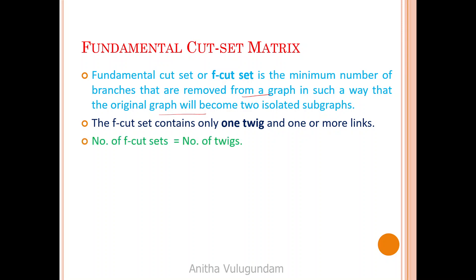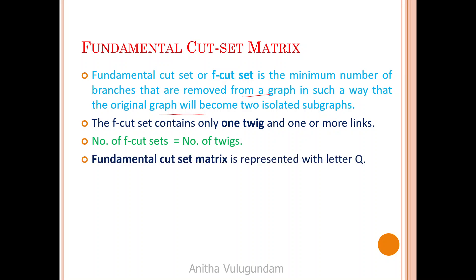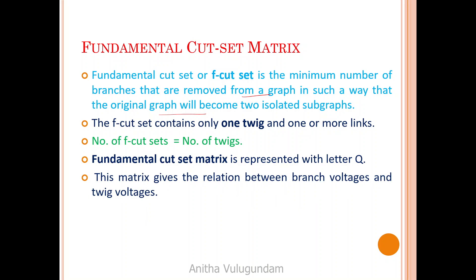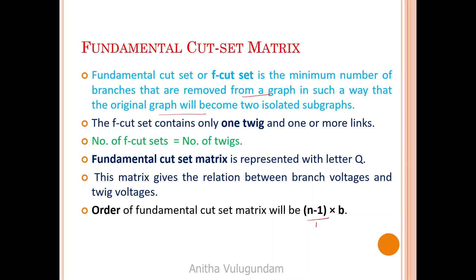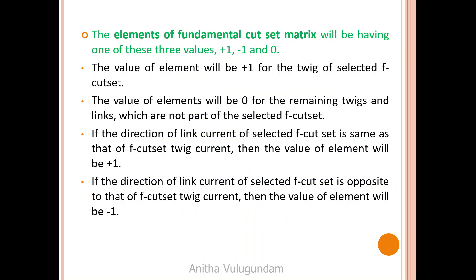The number of cut sets is always equal to the number of twigs. The fundamental cut set matrix is represented with the letter Q, and this matrix gives us the relationship between branch voltages and twig voltages. The order of the fundamental cut set matrix is T×B, or (n−1)×B, where T equals n−1, n is the number of nodes, and B is the number of branches.